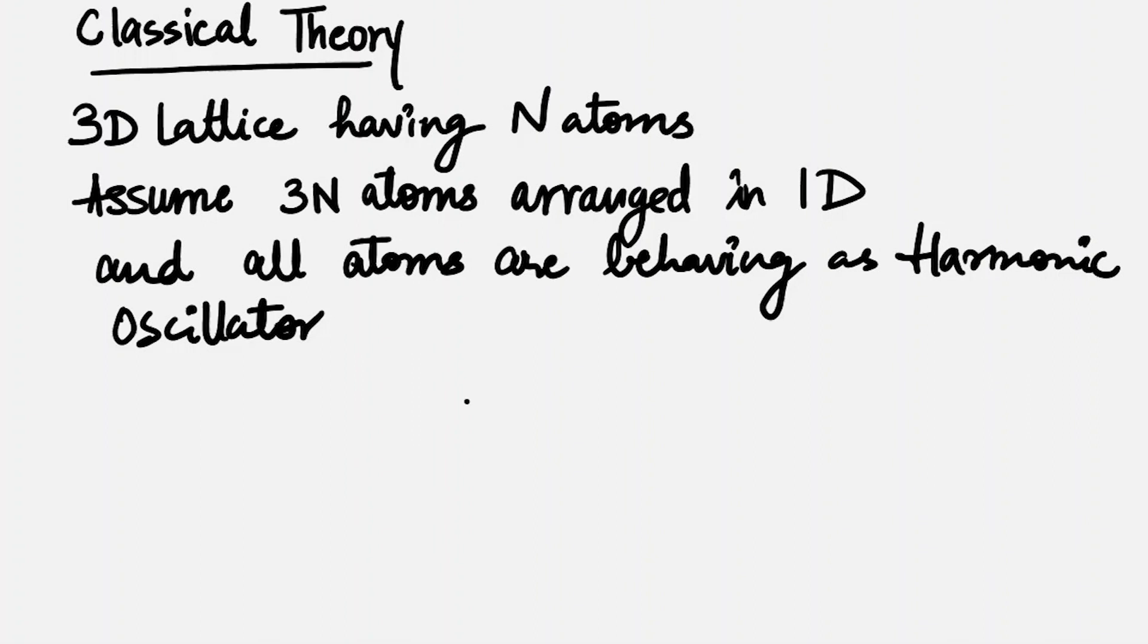We make a similar system assuming there are 3N atoms in a 1D system, so in total we have 3N atoms in the system. The second assumption is that all the atoms are behaving as harmonic oscillators.